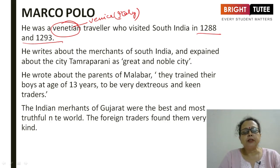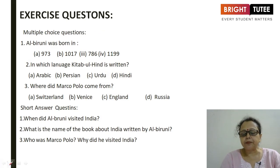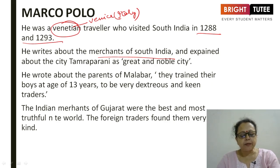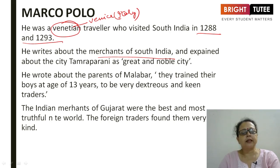Marco Polo was a traveller who visited South India in 1288 and 1293. He writes about the merchants of South India and describes Tamra Parani as a great and noble city. He also wrote about the ports of Malabar, Bengal, and Gujarat, noting their general prosperity. Both Marco Polo and Ibn Battuta witnessed flourishing trade at ports like Kayal — present-day Calicut — Cambay, and Bharoch on the Gujarat coast.